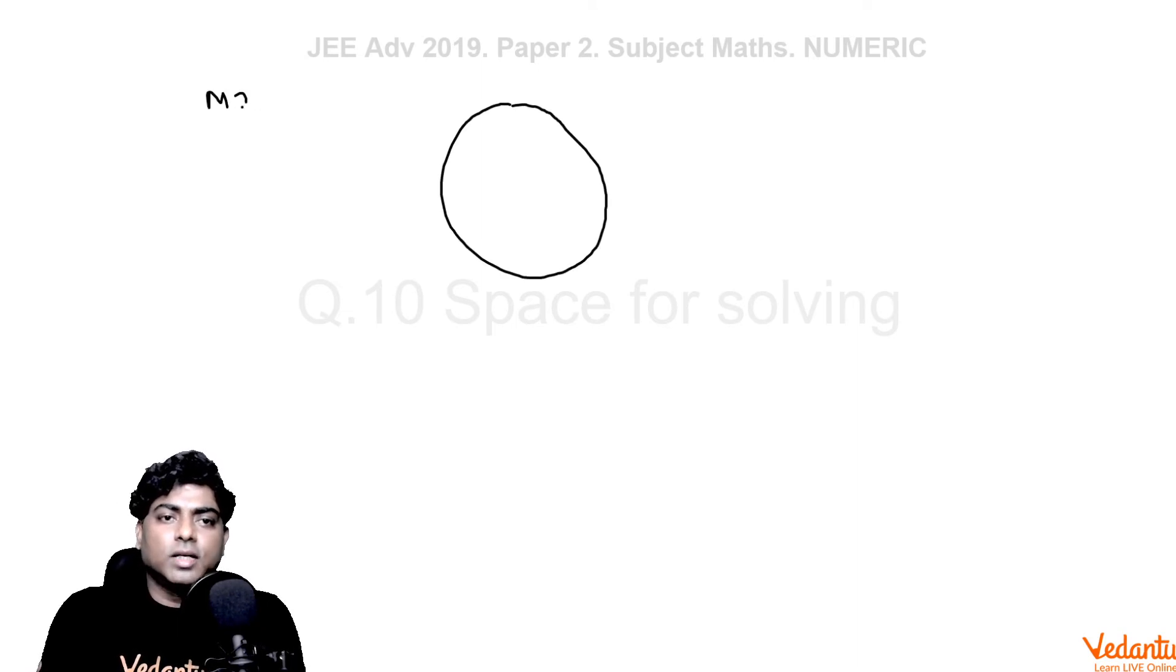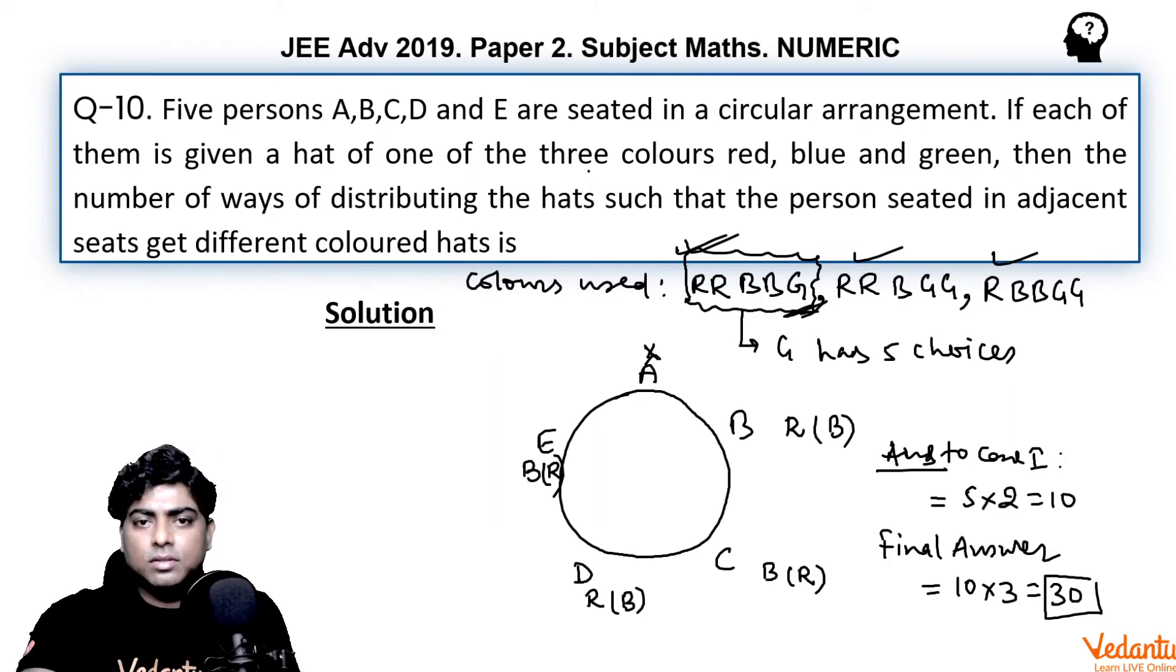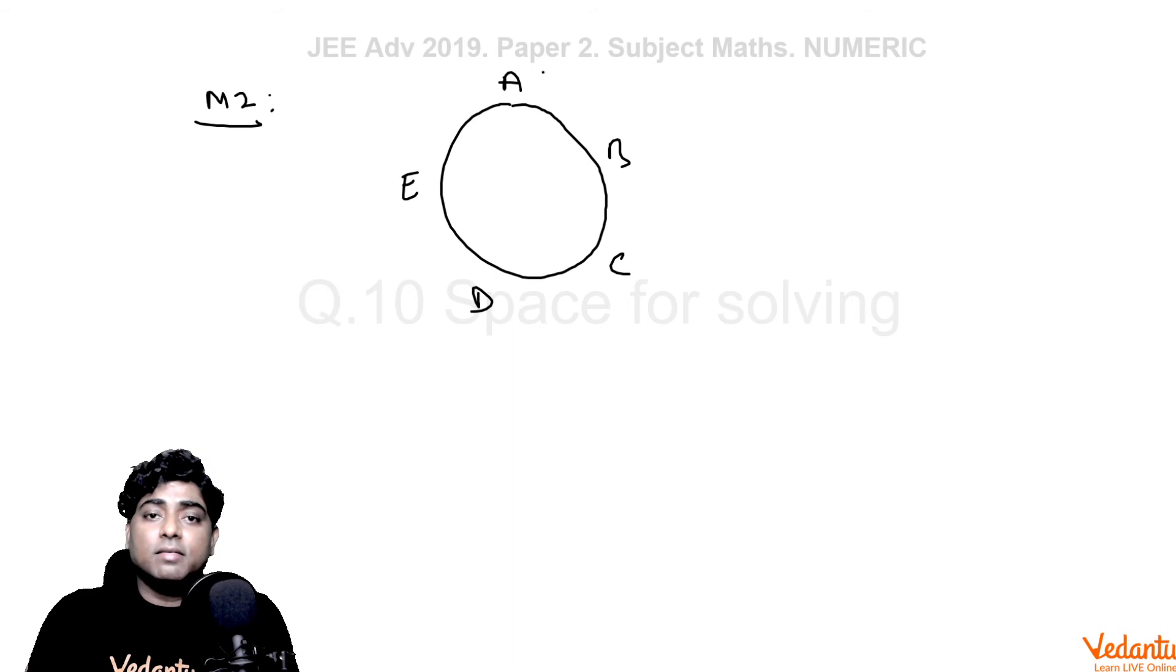Method 2. We can consider A, B, C, D, E. A can take any of the colors - red, blue, or green. So for A, there are three possibilities, so three ways for giving a hat to person A.